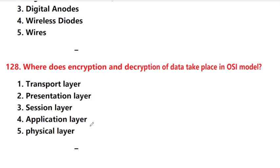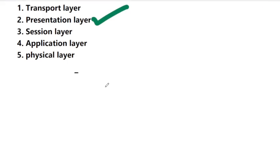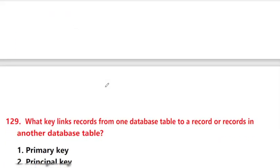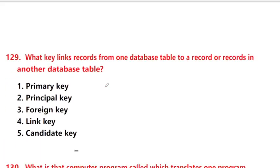Where does encryption and decryption of data take place in the OSI model? Answer is option 2: presentation layer. What key links records from one database table to a record or records in another database table?